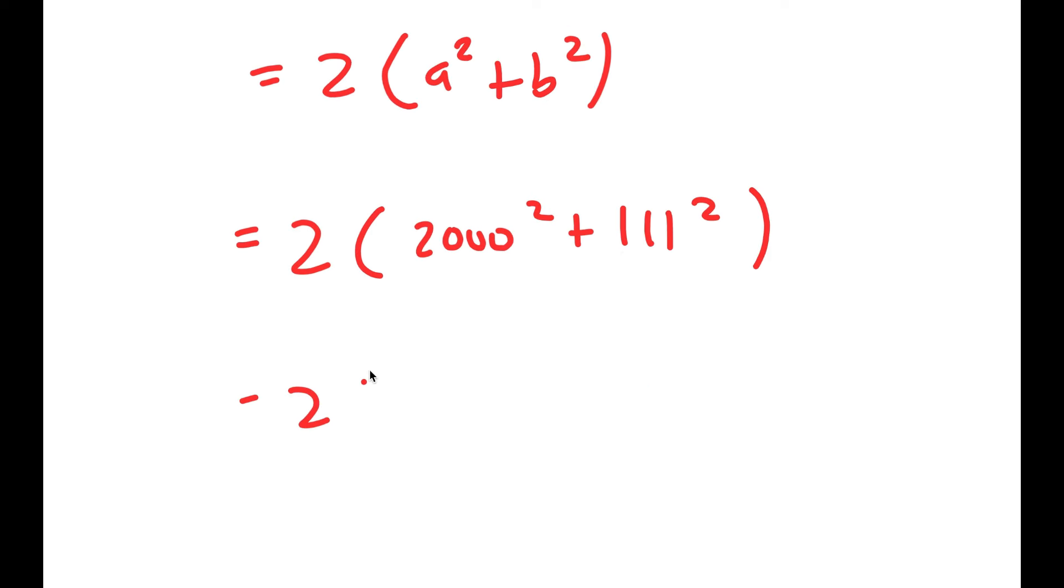Now, 2,000 squared is 4 million. So I get 2 times 4 million. And 111 squared is 24,642.